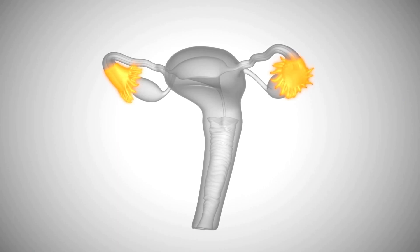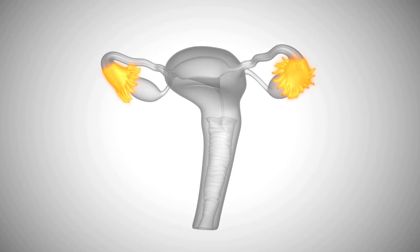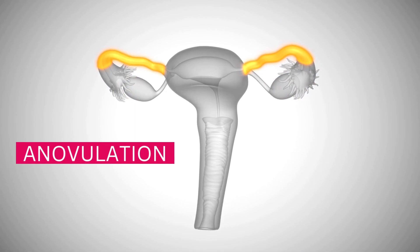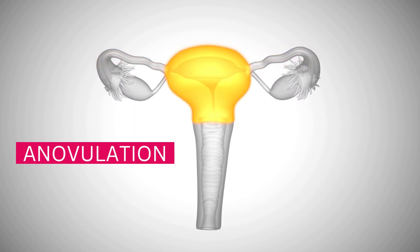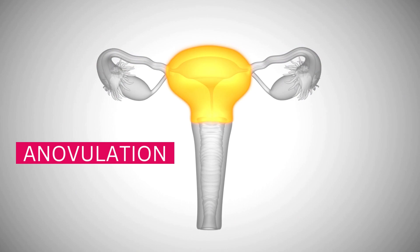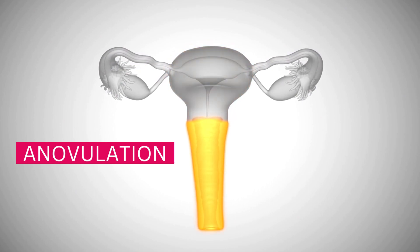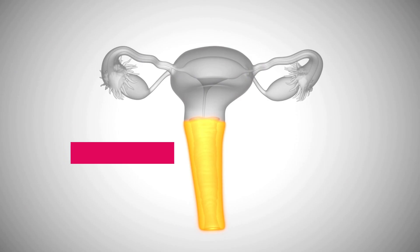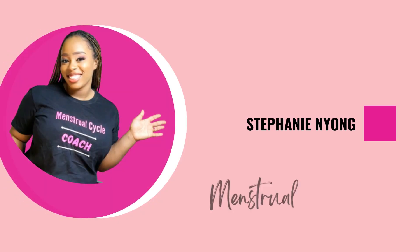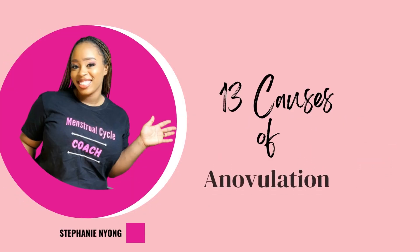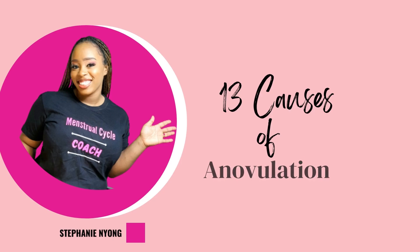When a woman is not ovulating, the medical term for it is anovulation, and there are several reasons for anovulation — most of which are caused by hormonal imbalances; others could be as a result of dysfunction of the ovaries, medications, or a medical condition. Hi, it's Stephanie Young here, your menstrual cycle coach, and in this video I'll be quickly explaining the causes of anovulation.